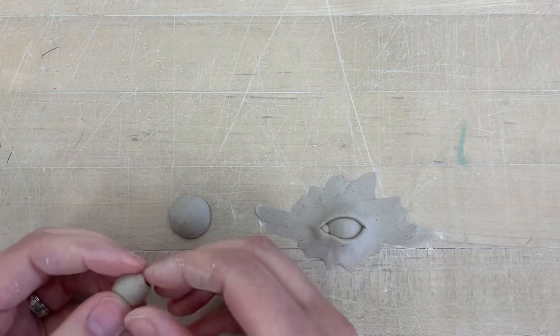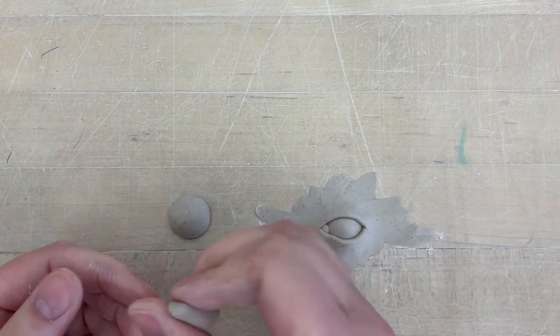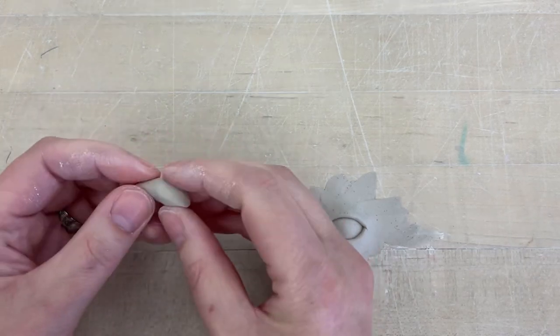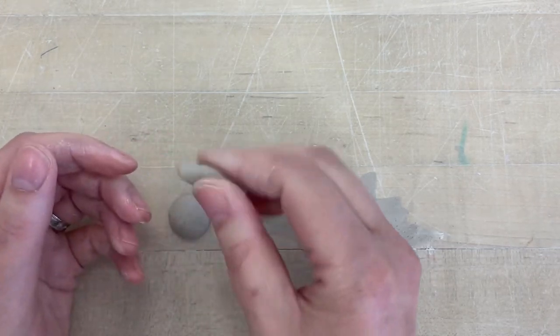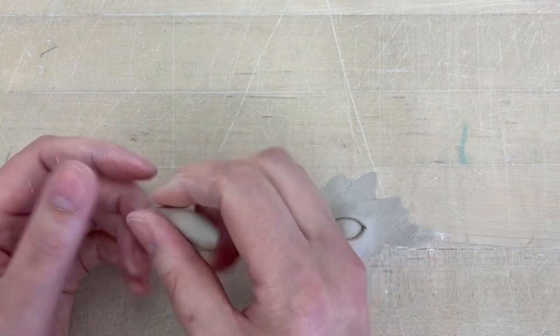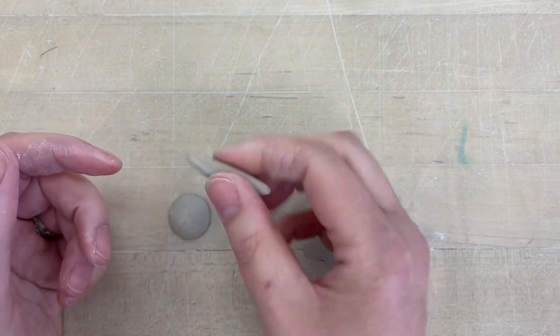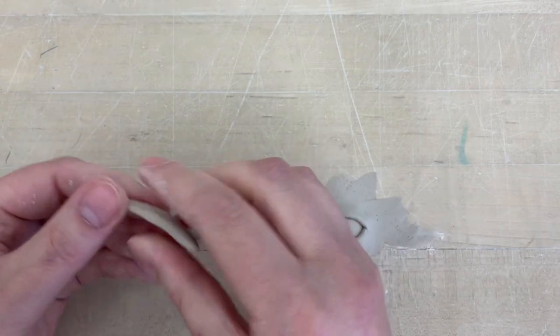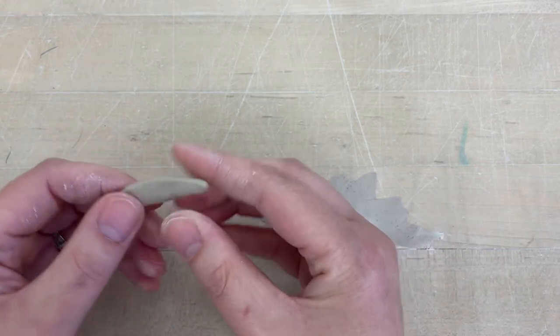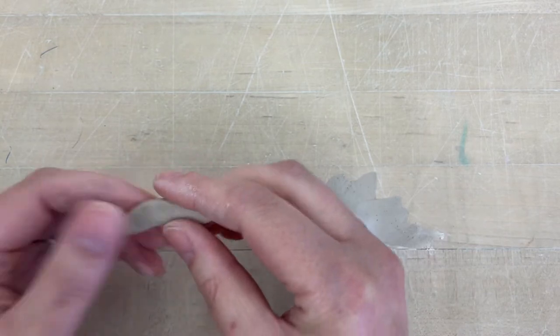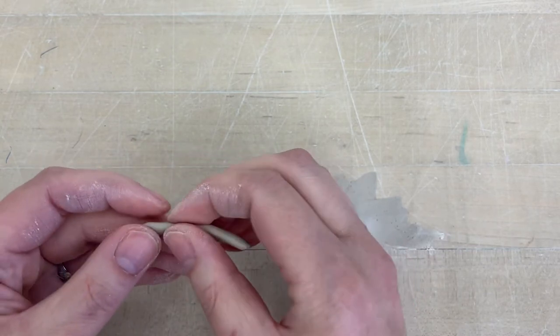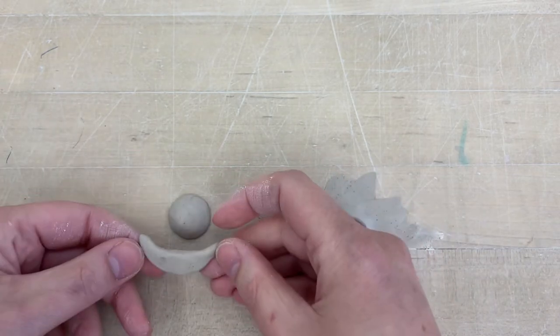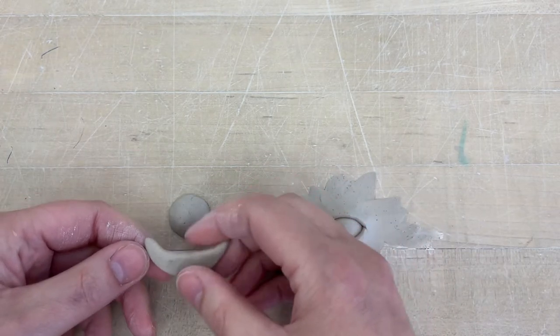Then you're going to take another squishy piece of clay and make a basic banana shape. Start with a ball and roll the edges a little bit thinner. This is going to be your eyelid. Flatten it out just a little bit, and whichever side's a little bit more curvy, that's going to be the one you use for your lid.